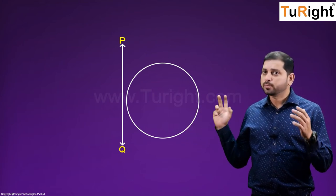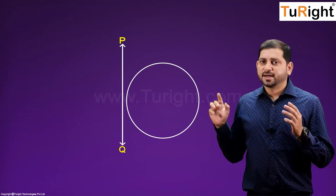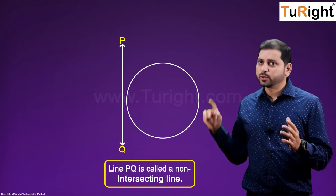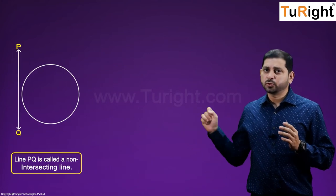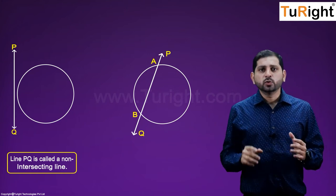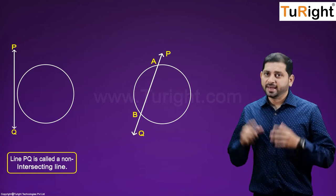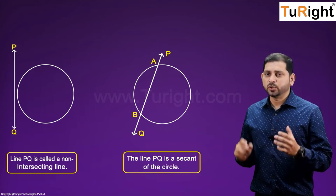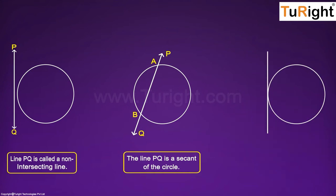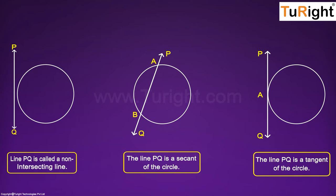In diagram 1, the line PQ and the circle have no common point — in this case, the line PQ is called a non-intersecting line with respect to the circle. In diagram 2, there are two common points A and B that the line PQ and circle share — in this case, the line PQ is called a secant of the circle. In diagram 3, there is only one common point A between the line PQ and the circle.